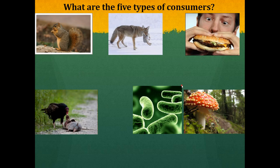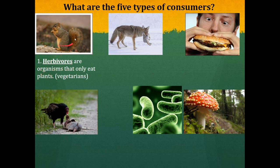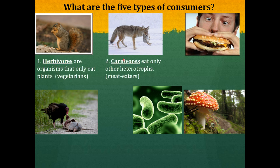There are five different types of consumers. The first type is an herbivore — consumers that eat only plants. Our example here is a squirrel. People can choose to be vegetarians, but they are not herbivores. The second type of consumer is a carnivore. Carnivores eat only other animals; they are meat eaters. Our example here is a wolf that has captured a rabbit.